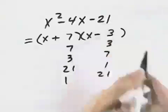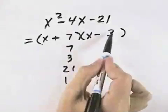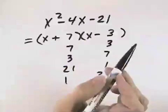So if we start with the 7 times 3, we can see we get an inner term of positive 7x and an outer term of negative 3x. 7 minus 3 is positive 4.